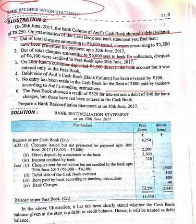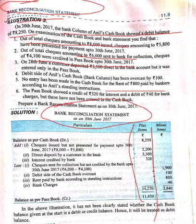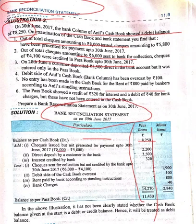Now you can see the Bank Reconciliation Statement as on 30th June 2017. The format has plus items and minus items. First of all, balance as per cash book: 8,250. Cheques issued but not presented for payment: 8,000 minus 5,800 equals 2,200.